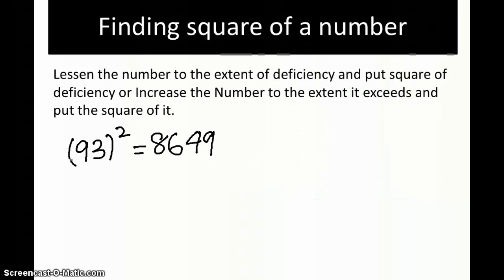Let's take one more example to check this out: 89 squared. Lessen the number by the extent of deficiency. It is deficient by 11 from 100, so we subtract it by 11. 89 minus 11 gives 78.